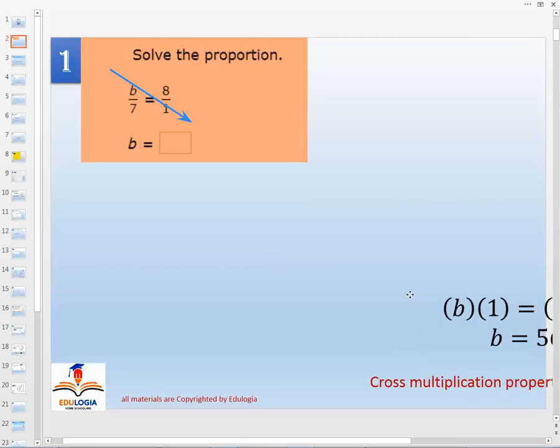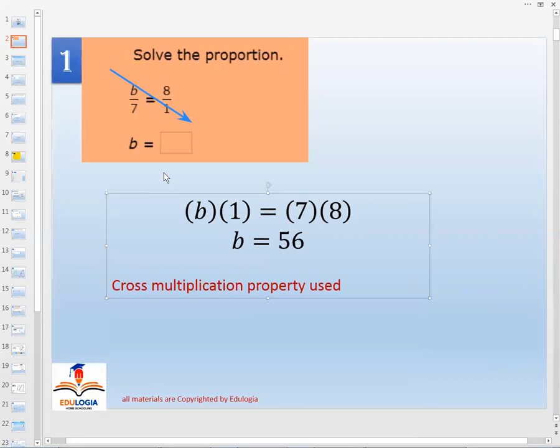Is it 56? Bravo, very good. I have a property called cross multiplication property. I have to use it, multiplying b times one in the left hand side, multiplying seven and eight in the right hand side. One times b is b, seven times eight is 56.